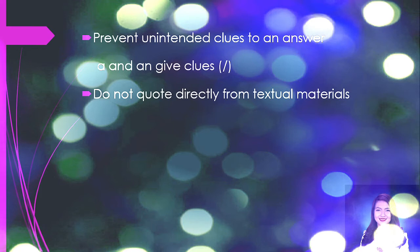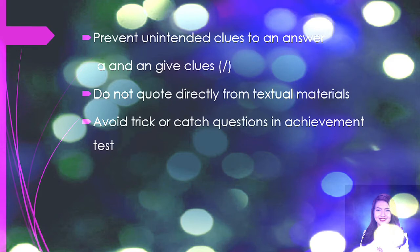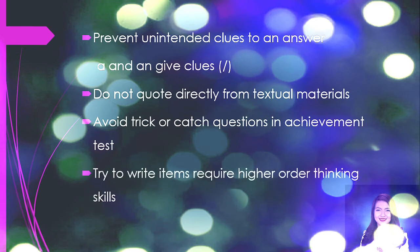Besides, direct quotes taken out of context are often ambiguous. Avoid trick or catch questions in an achievement test, because an achievement test is a test of developing skill or knowledge. The most common type is the standardized test used to measure skills and knowledge learned at a given grade level. Do not waste time testing how well students can interpret your intentions. Lastly, try to write items that require higher order thinking skills — not only at the remembering or understanding level, but also at the higher order thinking skills level, or what we call HOTS.